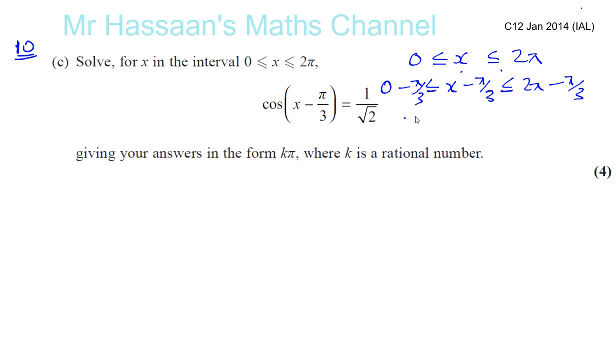So that gives us negative pi over 3 is less than or equal to x minus pi over 3, which is less than or equal to 2 pi minus pi over 3. Well, this is 6 pi over 3 minus pi over 3, which gives us 5 pi over 3, just like adding fractions together. If you're not sure about that, you can just do that on your calculator. But you should really have that basic knowledge of how to subtract fractions. This is like equivalent fraction: 6 pi over 3 minus 1 pi over 3 gives us 5 pi over 3.